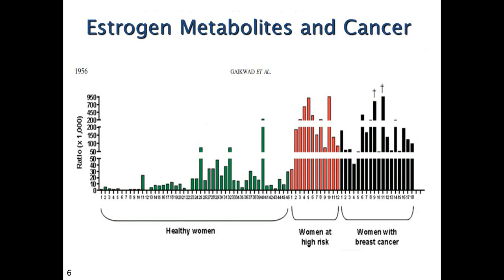Contrast that with this, where we're looking at women at high risk, women with breast cancer. If this were 2-16 ratio data, I would have a different opinion on it, because this is pretty dramatic data in terms of the distinction between cases and controls. But this is actually a measurement of the formation of DNA adducts.